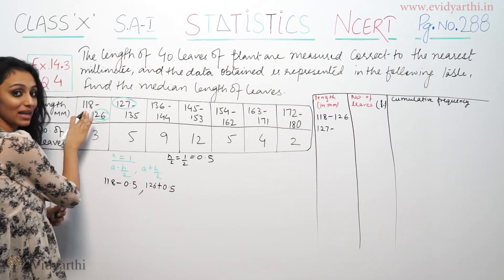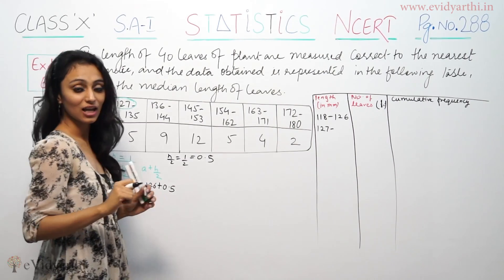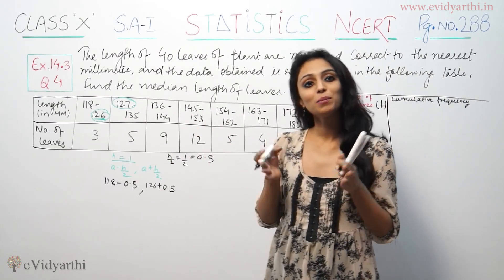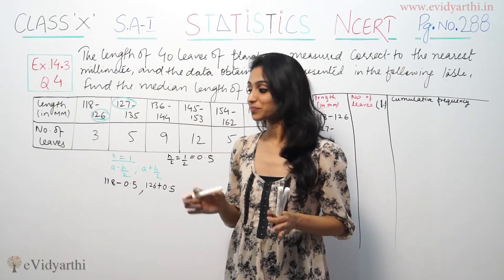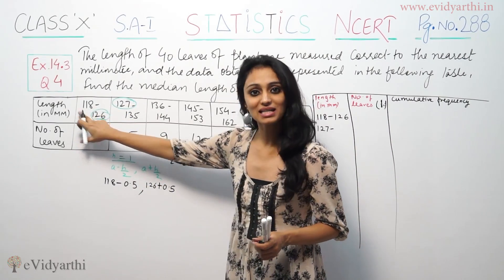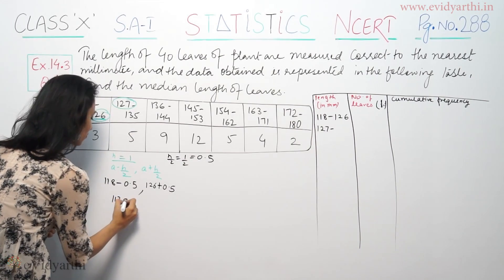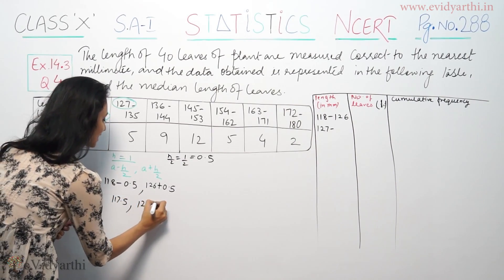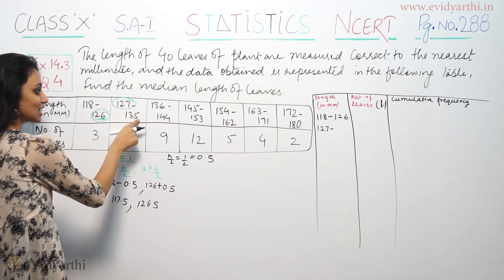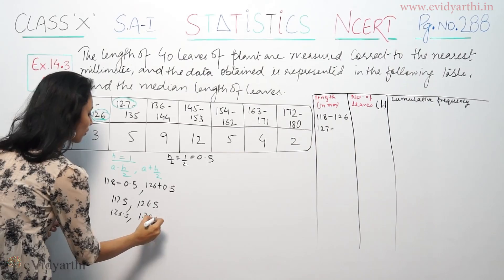That means you subtract 0.5 from the lower limit and add 0.5 to the upper limit. For example, when the class is 118–126, the lower limit becomes 117.5 and the upper limit becomes 126.5. Similarly, 127–135 becomes 126.5 to 135.5.